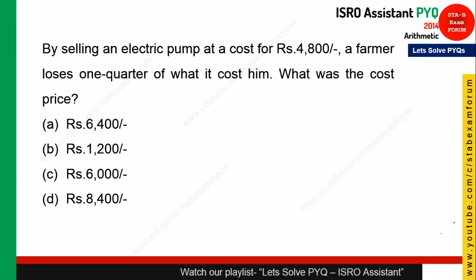The question says: by selling an electric pump at Rs.4800, a farmer loses one quarter of what it cost him. Find the cost price. One quarter means 1/4. So if it cost 4 rupees, he loses 1 rupee. The selling price is therefore 3/4 of the original cost price.